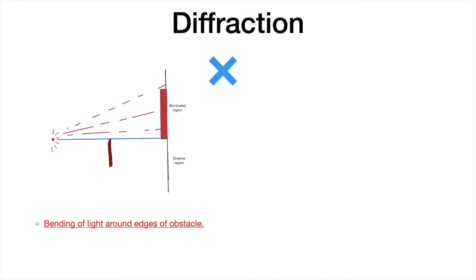This is according to ray optics, but it does not happen like that because of the bending of light around sharp edges. So instead of an illuminated region, what we get is a diffraction pattern for a straight edge for which there are maxima and minima, and the intensity of maxima will keep on decreasing as we go away from the center.